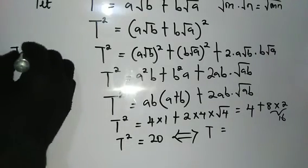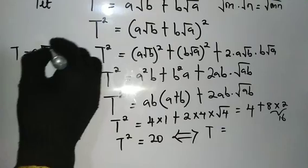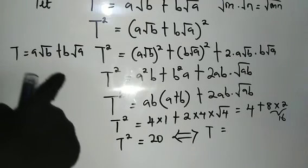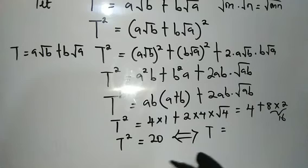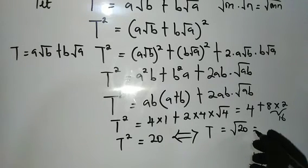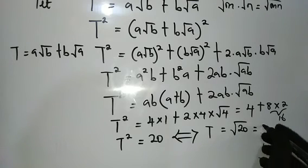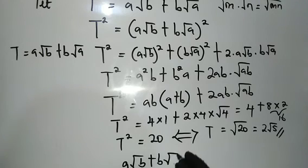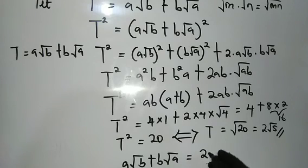So from here we have t squared equal to 20. Since t equals a times the square root of b plus b times the square root of a, we only take the positive square root of 20. The square root of 20 simplifies — since 20 equals 4 times 5 — to 2 times the square root of 5. Therefore, a times the square root of b plus b times the square root of a equals 2 root 5, and this is the answer.